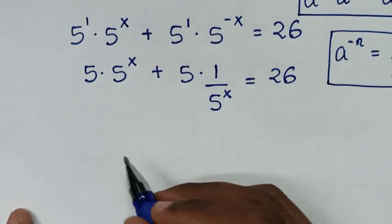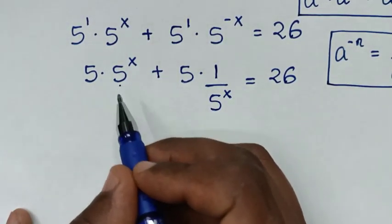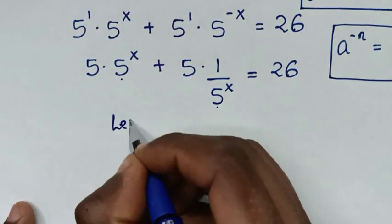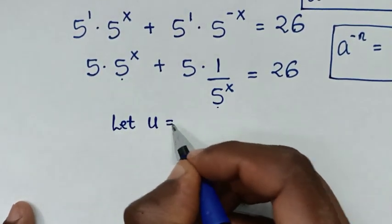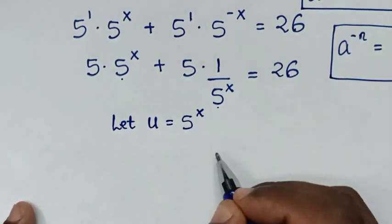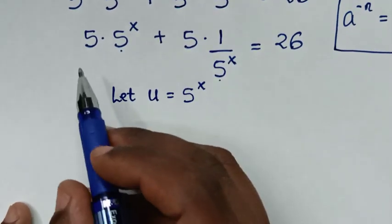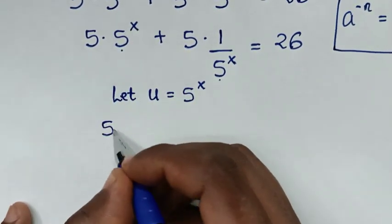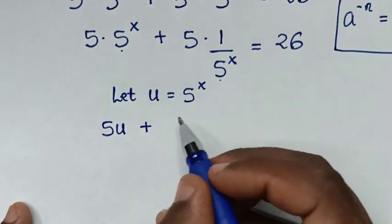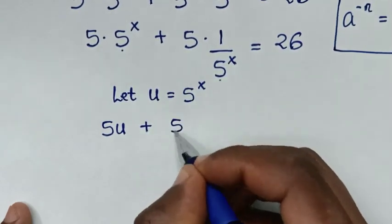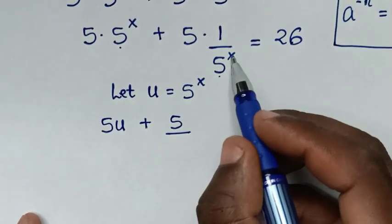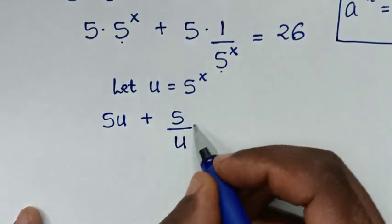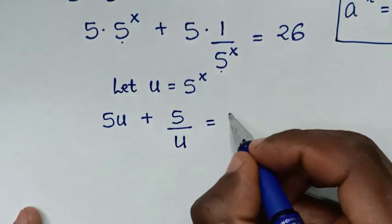In the next step, since 5 power x is common, let u equal 5 power x. Substituting into our equation, it becomes 5 times u, which is 5u, plus 5 times 1 over 5 power x, which is 5 over u, is equal to 26.